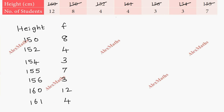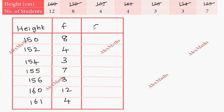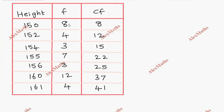Here we have the table with a cumulative frequency column as the third column, labeled CF. The cumulative frequencies are calculated by adding: 8, then 8+4=12, 12+3=15, 15+7=22, 22+3=25, 25+12=37, 37+4=41.